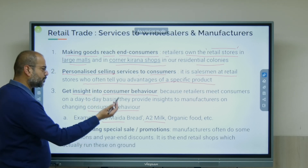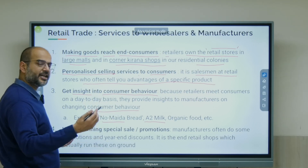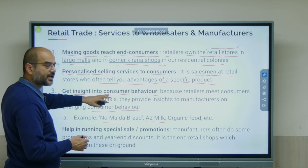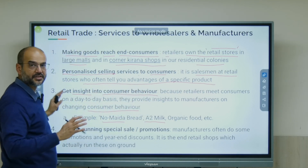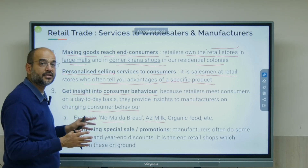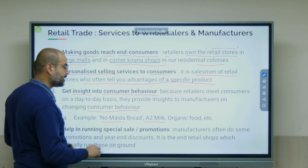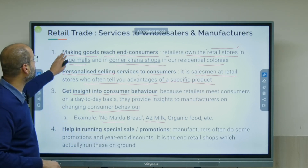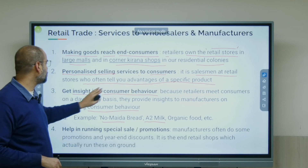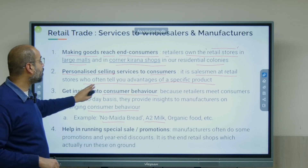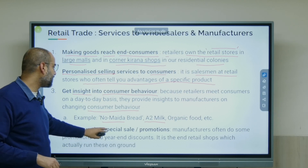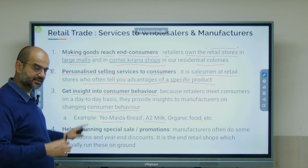Retailers also help in running special promotions and sales. For example, what special promotions are going on? We need to give discounts at year-end. The manufacturer gives a discount to the retailer, and the retailer passes it on. Inventory clearance during Christmas sales, Diwali sales — all of this. So the services retailers provide to manufacturers and wholesalers are: making goods reach end consumers, personalized selling, getting insights into consumer behavior, and helping run special sales.